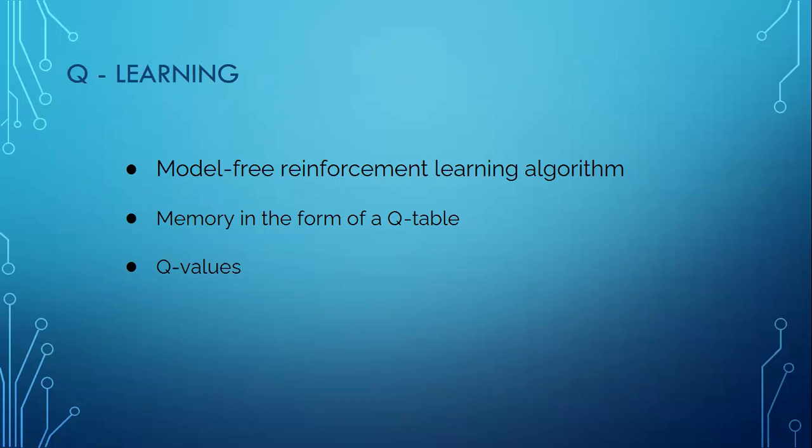Q names the function that returns the reward used to provide the reinforcements and can be said to stand for the quality of an action taken in a given state. A good way to approach a solution is using this simple Q-learning algorithm, which gives our agent a memory in the form of a Q-table. In this table of size state times actions, we store a value for each state-action combination. Those values estimate the reward we get by taking that action and are called Q-values. Higher Q-values imply better chance of getting greater rewards.